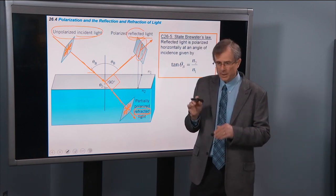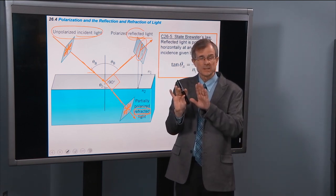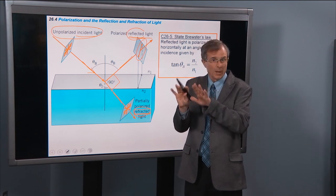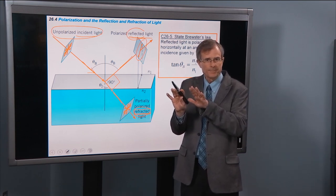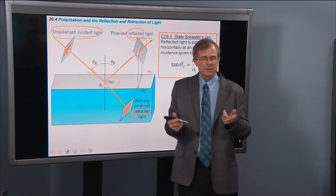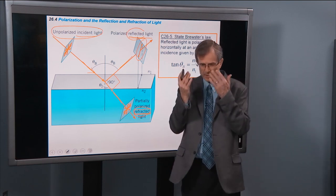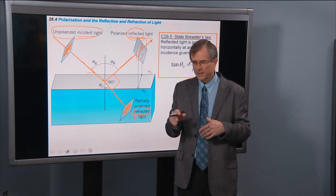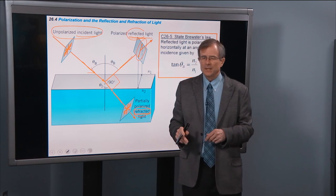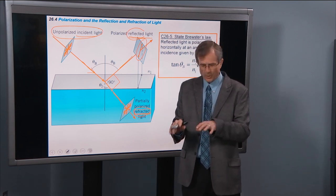If you have vertically polarized sunglasses, they'll block all of that reflected light. I don't know if you've ever noticed, but when you have sunglasses that are polarized on and you're on a rainy day, the ground looks weird.